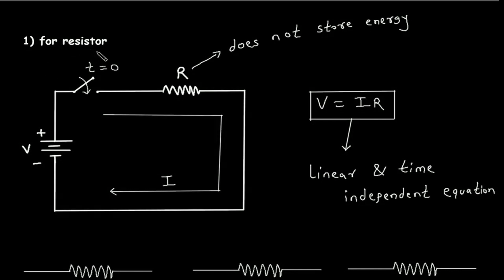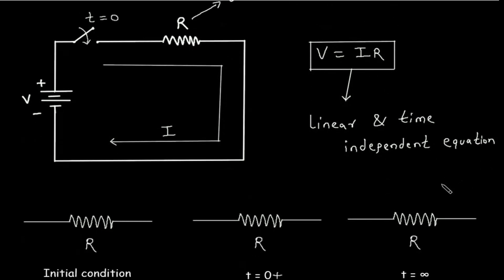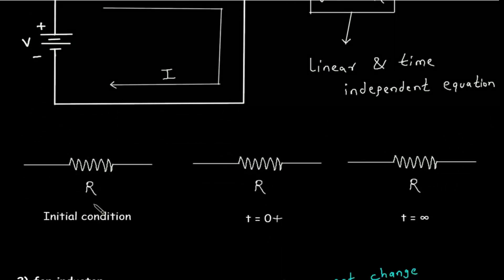For a resistor, the resistor does not store energy. According to Ohm's law, v = I × R, which is a linear and time-independent equation. So in the case of the initial condition, the resistance remains as it is. At t=0⁺ the resistance remains as it is, and at t=∞ the resistance also remains as it is.